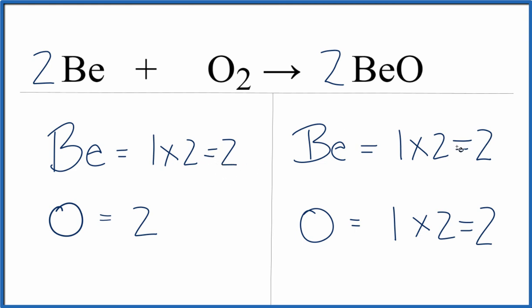We have two berylliums here, two here, two oxygens, two oxygens. We're done. This is Dr. B with the balanced equation for Be plus O2 yields BeO. And thanks for watching.